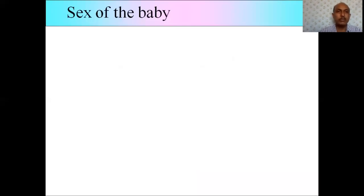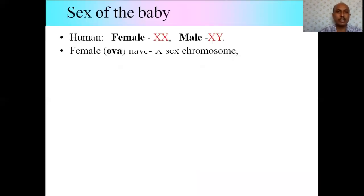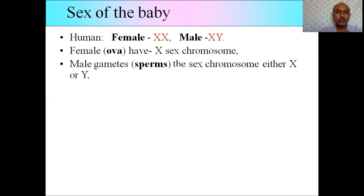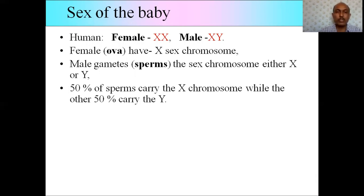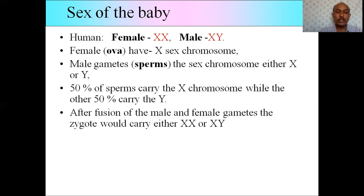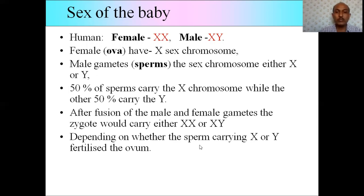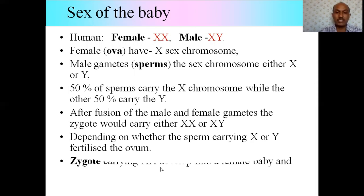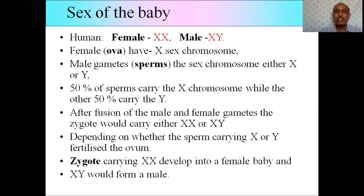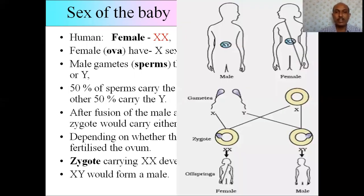Sex of the baby: females are XX, males are XY. Female ova carry only X chromosomes, while male sperm carry either X or Y chromosomes — 50% carry X and 50% carry Y. After fusion of male and female gametes, the zygote carries either XX or XY, depending on which sperm fertilizes the ovum. A zygote with XX develops into a female baby, and XY into a male.